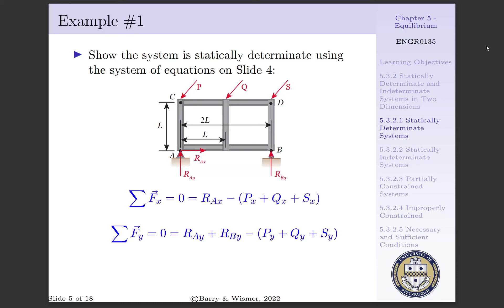Moving to the summation of forces in the Y direction, we see that RAY plus RBY have to be equal to the Y components of our applied forces PY, QY, and SY. Currently, we have one equation and two unknowns.